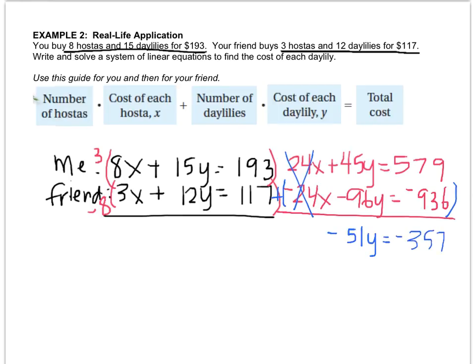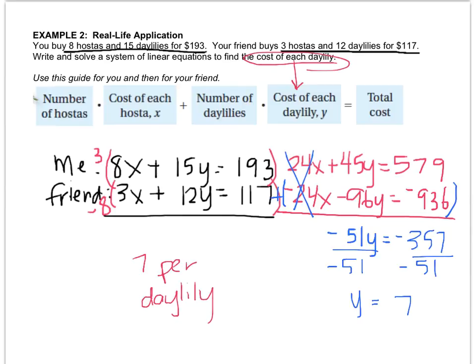I hope that goes in evenly. Divide by negative fifty-one—yeah, that's y equals seven. Now if you read the question carefully it says find the cost of each daylily, and in our example daylilies was y. So technically we found out that daylilies cost seven dollars per daylily. If the question also asked how much does each hosta cost, then you'd plug y into one of the equations over here and solve for x. But we can stop right there. And if you have any questions, write them down and ask me when you come to class.